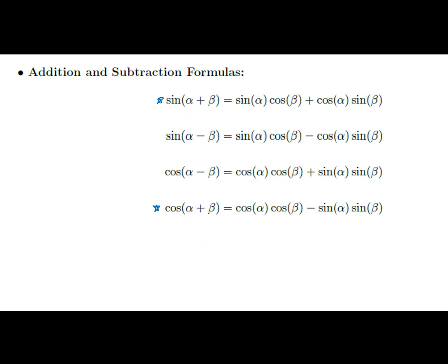Similarly for cosine: the pattern is cosine, cosine, sine, sine — but then you remember to put a minus in there. So for the sine of alpha plus beta, think sine, cosine, cosine, sine with a plus. For the cosine of alpha plus beta, it's cosine, cosine, sine, sine with a minus. Commit those two to memory and the other formulas fall right out.